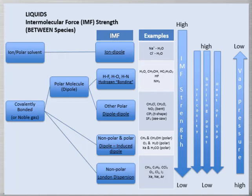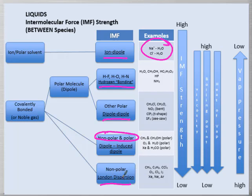Our intermolecular forces include ion-dipole, which is between an ion and a polar molecule—this is how ionic compounds dissolve in water. We have hydrogen bonding, dipole-dipole, dipole-induced dipole between a nonpolar and polar, and London dispersion forces, which are the only force found in nonpolar but exist in all of these. These rank from highest to lowest, but that is relative. The main thing we'll look at is properties of substances to determine the strength of IMF.